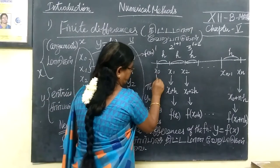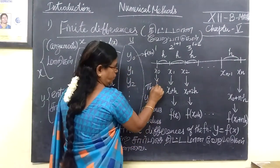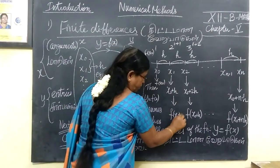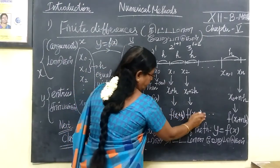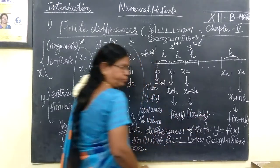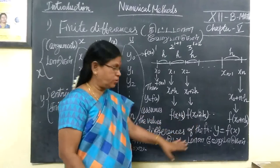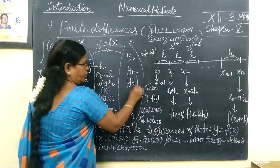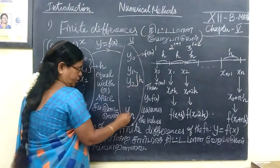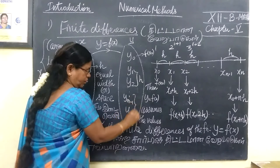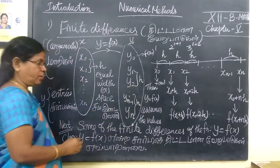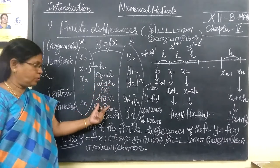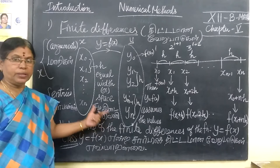This is f of x₀. Now here I get, this will be f of x₀. This will be f of x₀ plus h. This will be f of x₀ plus 2h. So this h is equal. This will be f of x₀ plus nh.